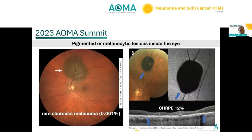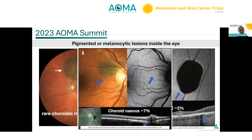When thinking about pigmented melanocytic lesions inside the eye, things that come to mind include firstly a choroidal melanoma, which is very much the topic of this conference — a rare lesion. Another option is a CHRPE, which is not in the choroid but within another layer of cells just above the choroid, just underneath the retina. But really, the most common one seen in optometric practice is a choroidal nevus.